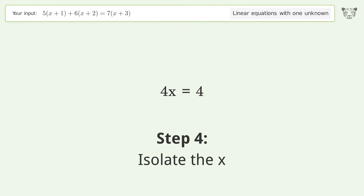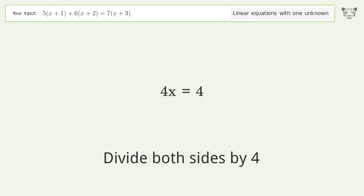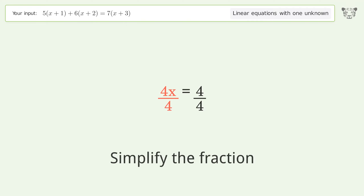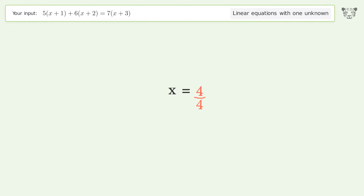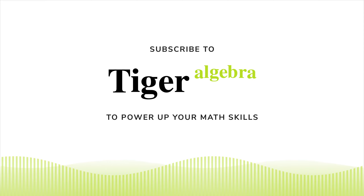Isolate the x — divide both sides by 4. Simplify the fraction. The final result is x equals 1.